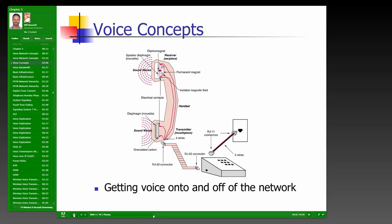By the diaphragm vibrating, the granulated carbon conducts electricity into electrical waves, which are put into the connecting cable that attaches the handset to the base portion of the phone. The base portion connects to a wall jack using RJ11 connectors — a two-wire system. The handset itself has four wires: a transmitting wire pair and a receiving wire pair. These days we also have wireless handsets that don't have that physical connection.